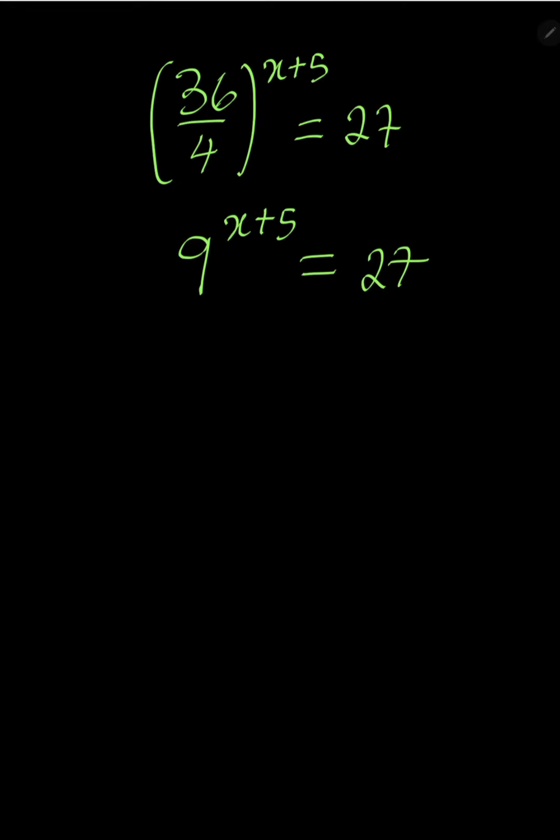Remember that 9 can be written as 3 to the power of 2, then we have x plus 5 existing here already, equal to 27 which is 3 to the power of 3. So we have 3 power 2 times x is 2x and 2 times 5 is 10, everything equal to 3 power 3.